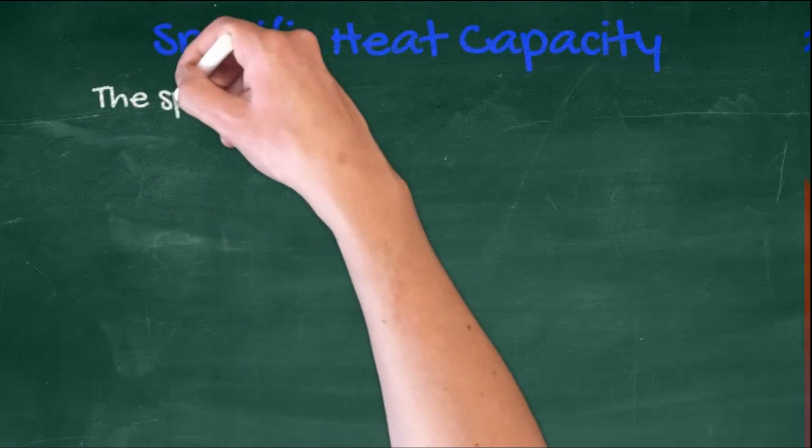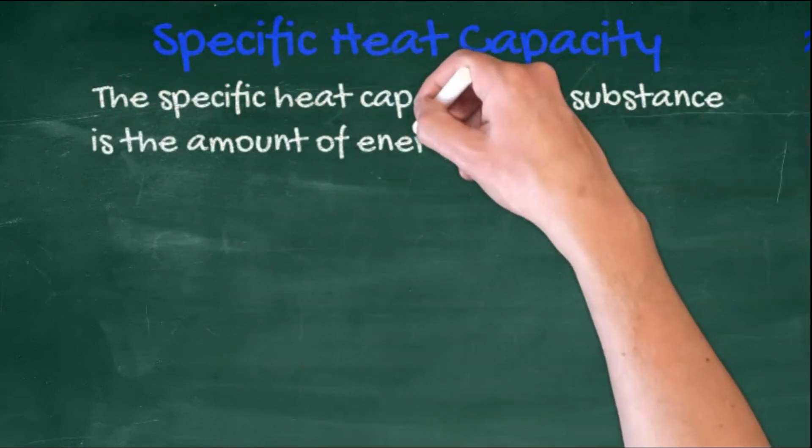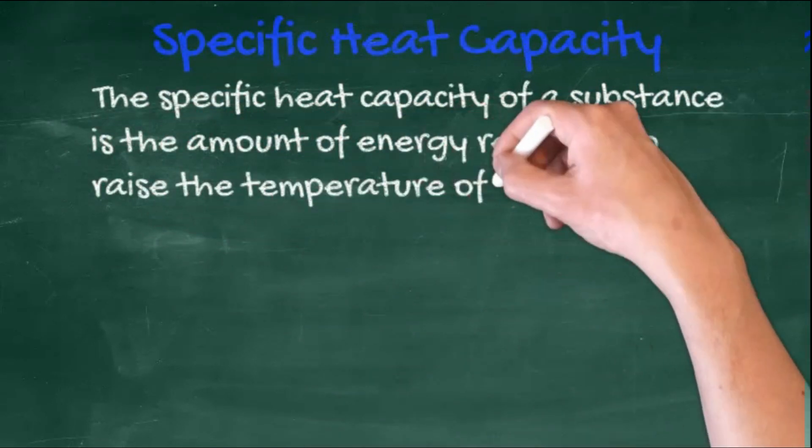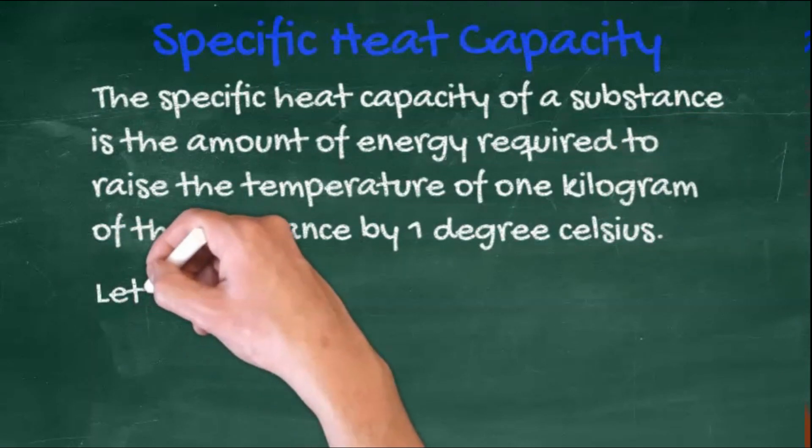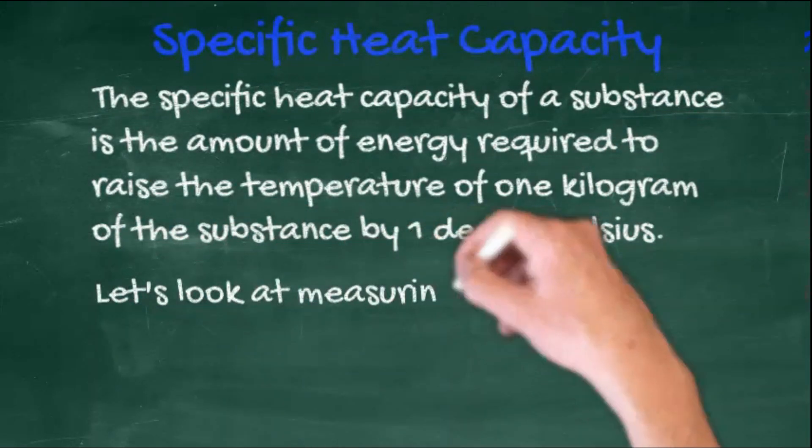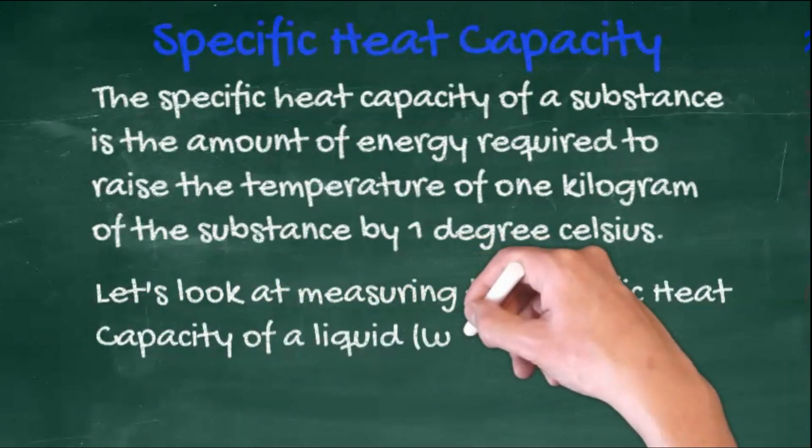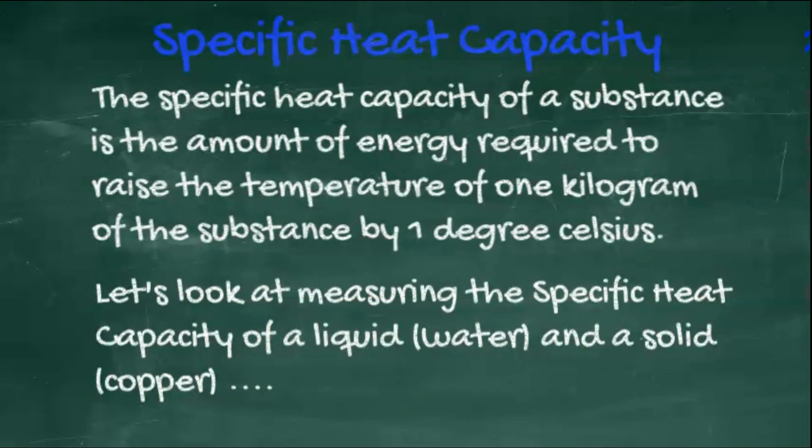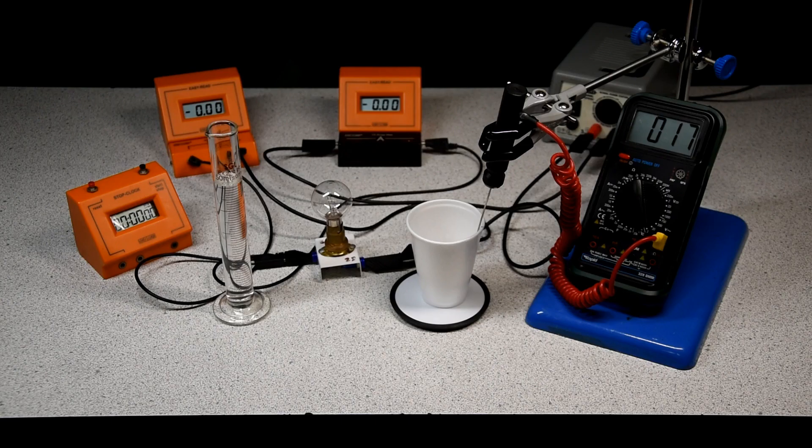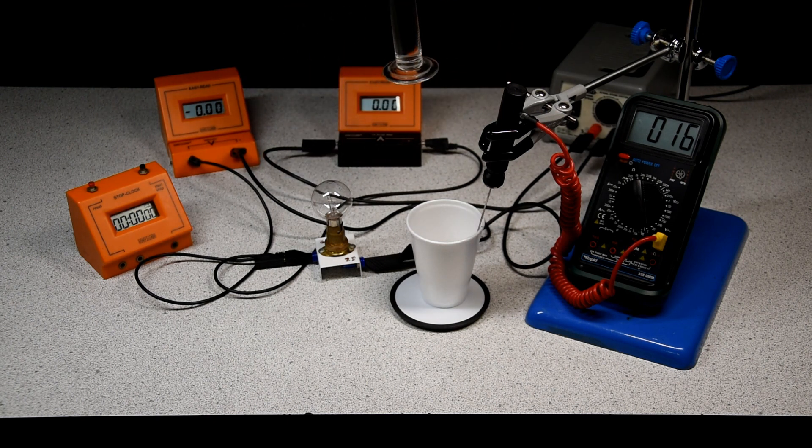Specific heat capacity. The specific heat capacity of a substance is the amount of energy required to raise the temperature of one kilogram of the substance by one degree Celsius. Let's look at measuring the specific heat capacity of a liquid, in this case water, and a solid, copper. Measuring the specific heat capacity of water is another core practical. Initially we're going to add 50 centimeters cubed of water to an insulated polystyrene cup.